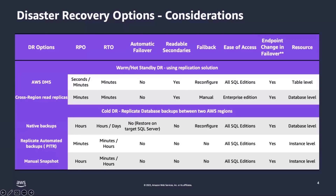For customers who want to build a cost-effective DR solution with RPOs in hours, they can consider building a cold DR site. They can simply move their SQL Server native backups or replicate the RDS snapshot, which is part of the automated backup, between two regions to achieve the same DR goal.